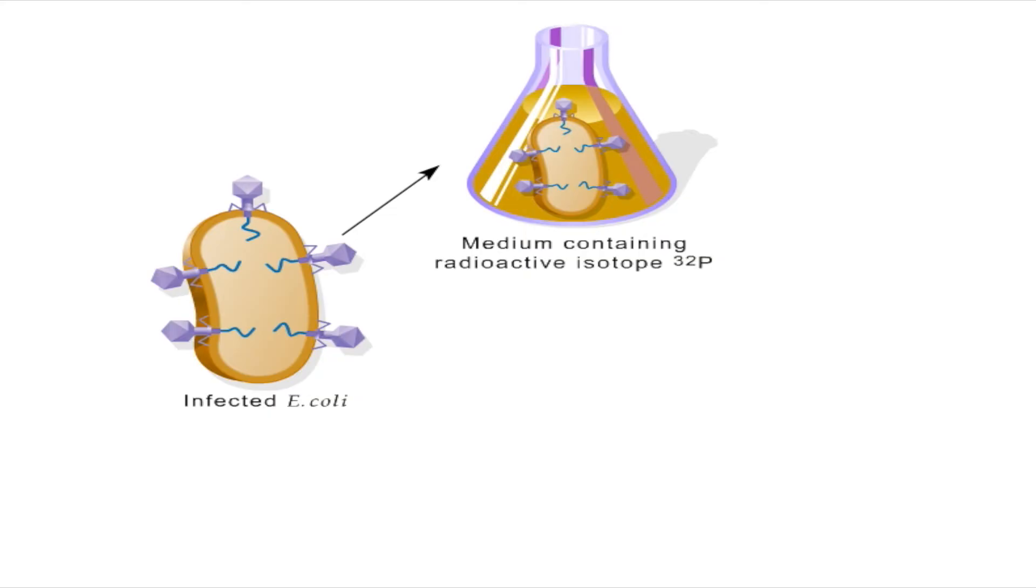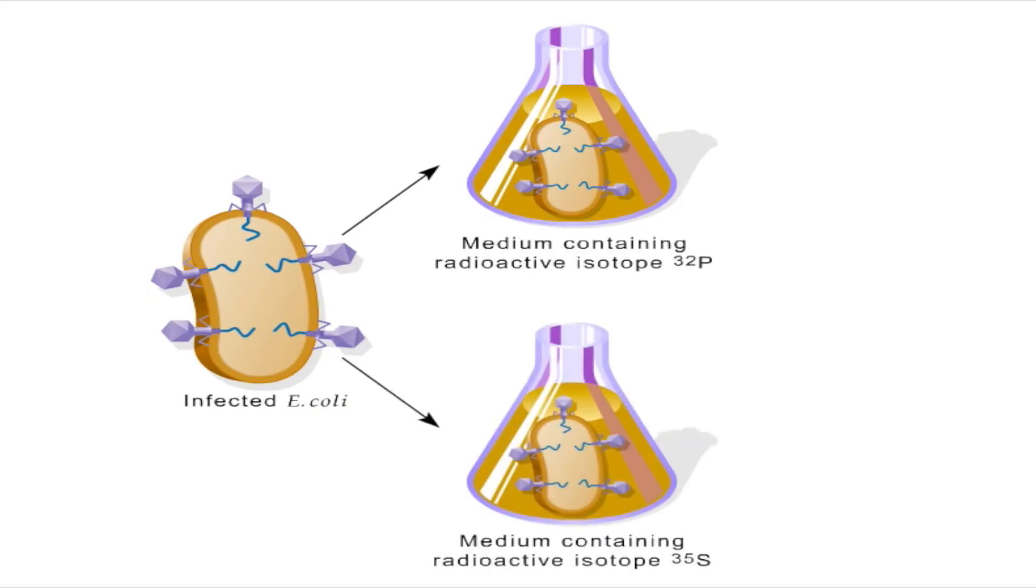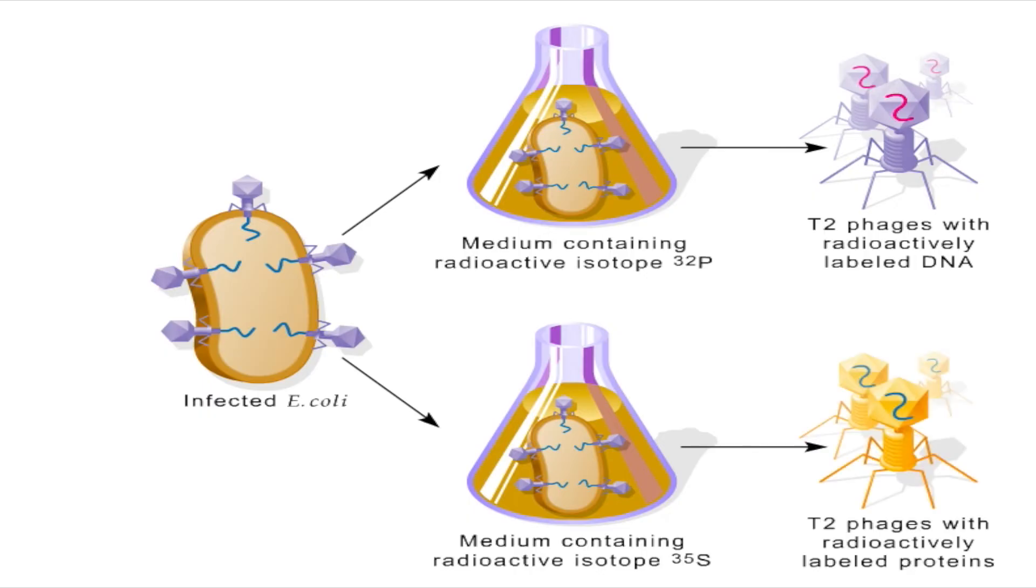One containing the radioactive isotope Phosphorus-32, and the other containing the radioactive isotope Sulfur-35. All the phages released from the bacteria grown in the Phosphorus-32 medium had radioactively labeled DNA, while all the phages released from the bacteria grown in the Sulfur-35 medium had radioactively labeled proteins.